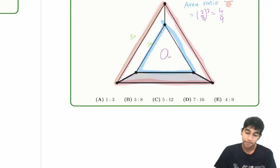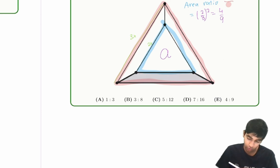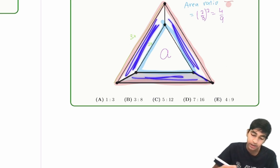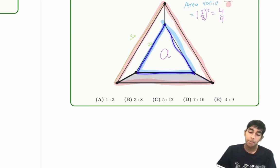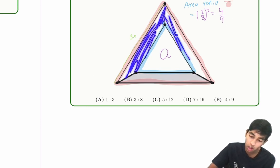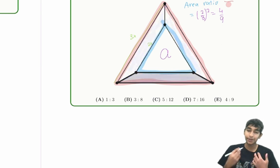So now, how do we use this? We're trying to find this trapezoid. Notice that the problem states three congruent trapezoids make up the region in between. So these three trapezoids all combine to make up the region that's outside the small equilateral triangle but inside the big equilateral triangle. If we can find this entire region, we can just divide by three to find the area of one trapezoid.